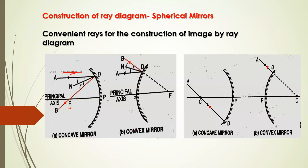But look at the diagram of a convex mirror. The light ray is the same — it is parallel to the principal axis. But after reflection, in the convex mirror, it appears to diverge because the convex mirrors are diverging. If I extend it back, it has started from the focus of a convex mirror. So the ray parallel to the principal axis will appear to diverge from the focus of a convex mirror after reflection.